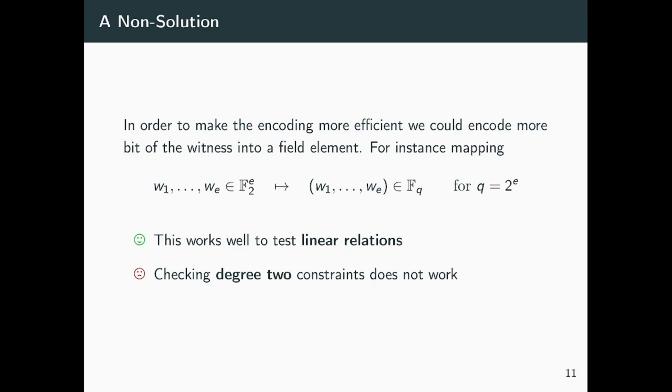However, what is not easy to do in this setting is to check degree-2 constraints over F2, only having access to the embedded elements. This is unfortunately the case because the larger field multiplication does not correspond to the entrywise multiplication. It cannot be the case, because entrywise multiplication essentially allows for zero divisors, which cannot exist in a field.